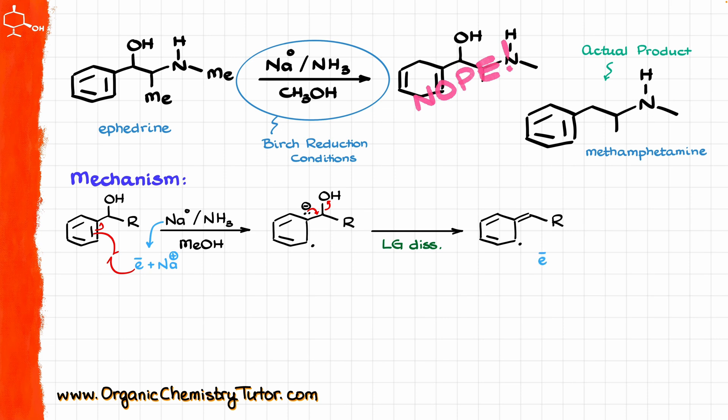So we are going to bring our electron in again — the electron is going to recombine with the radical that we have on the ring. We are going to get the following anionic species, and here, as we would expect, there is a whole bunch of resonance structures, and there is again one that is going to be the most relevant.